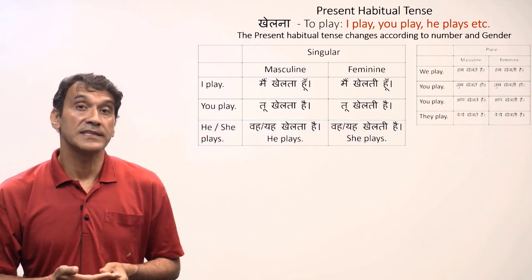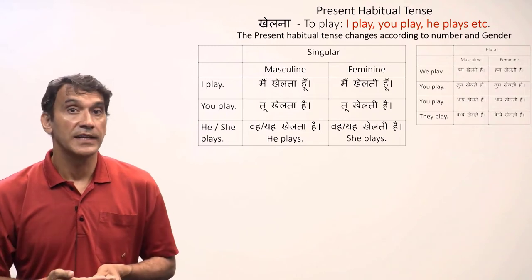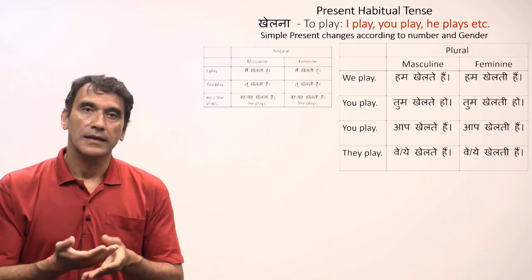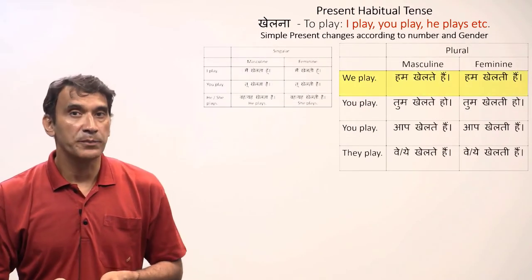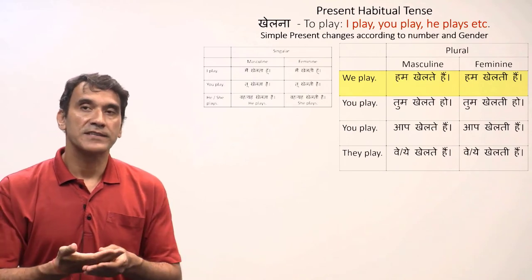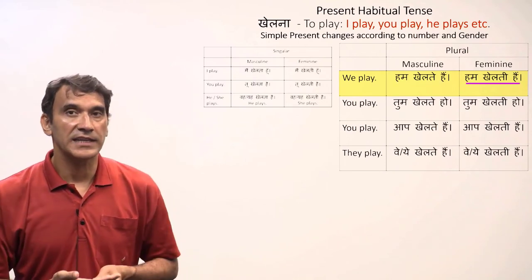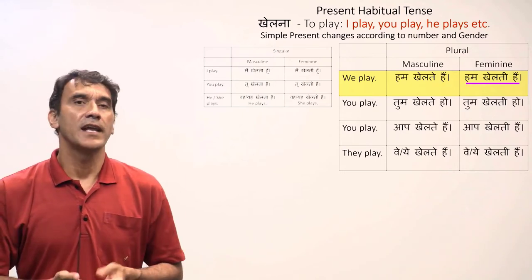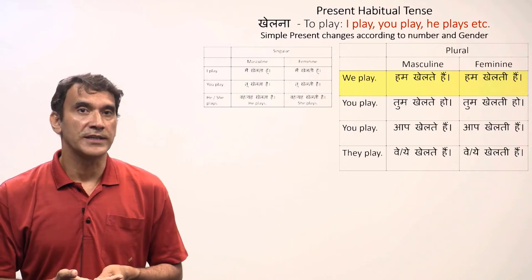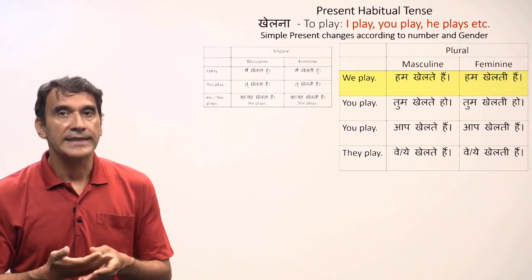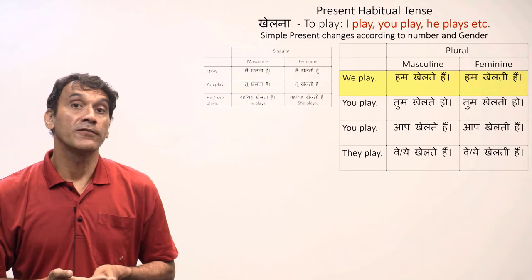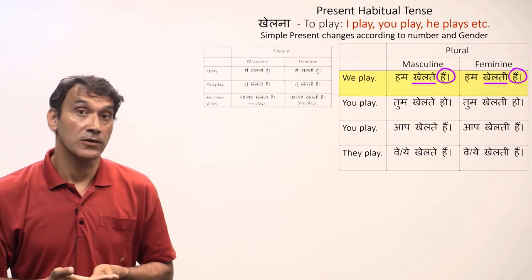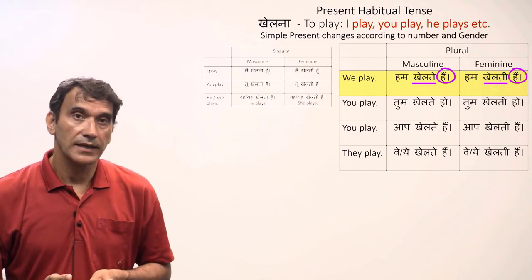The present habitual tense is gender-sensitive, with different forms for masculine and feminine. For the plural: 'hum khailtay hain' for a masculine subject (we play) and 'hum khailti hain' for a feminine subject. A group of boys would say 'hum khailtay hain,' a group of girls 'hum khailti hain,' and a mixed-gender group takes the masculine plural form. The plural forms of the participle — 'khailtay' and 'khailti' — are used, and the helping verb is also in plural form: 'hain.'